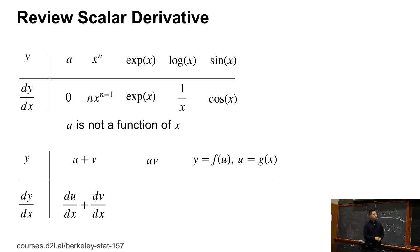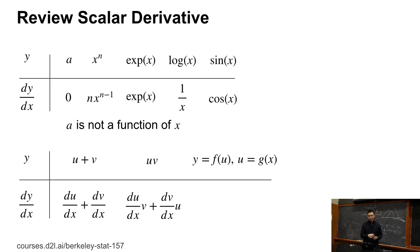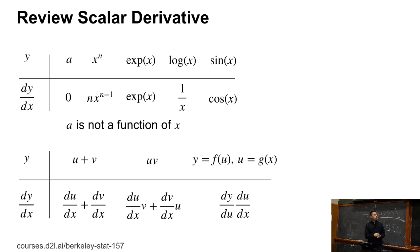If y equals u plus v, the derivative is du over dx plus dv over dx. If y equals u times v, we get du over dx times v plus dv over dx times u. Similarly for the chain rule: if y is a function of u and u is a function of x, we write dy over du times du over dx. That's the scalar case.